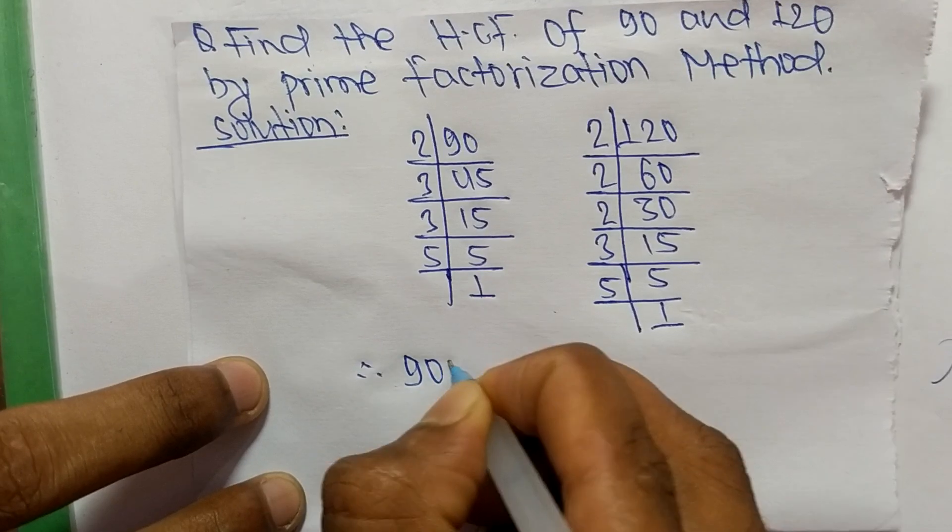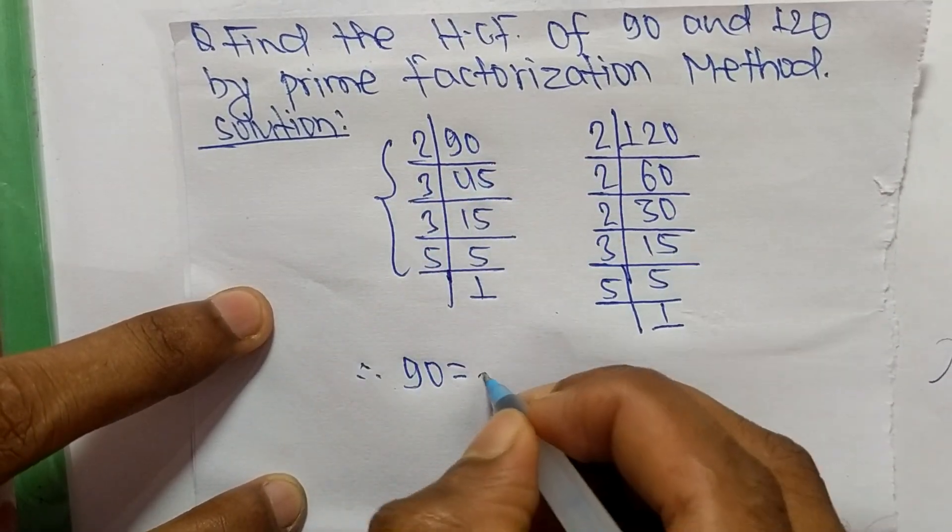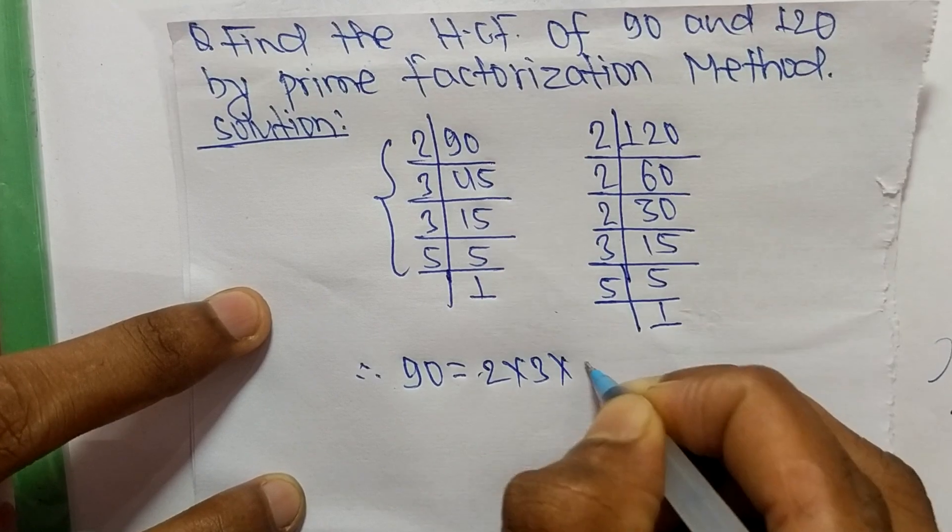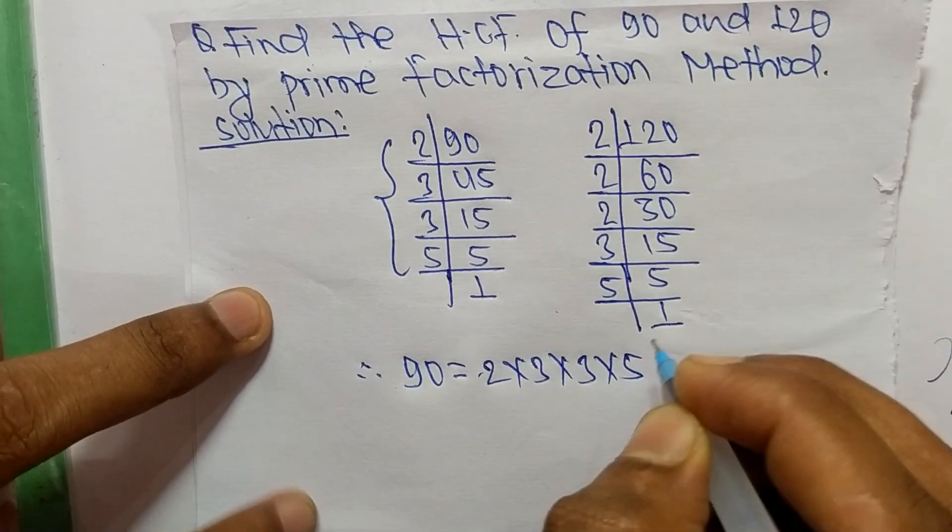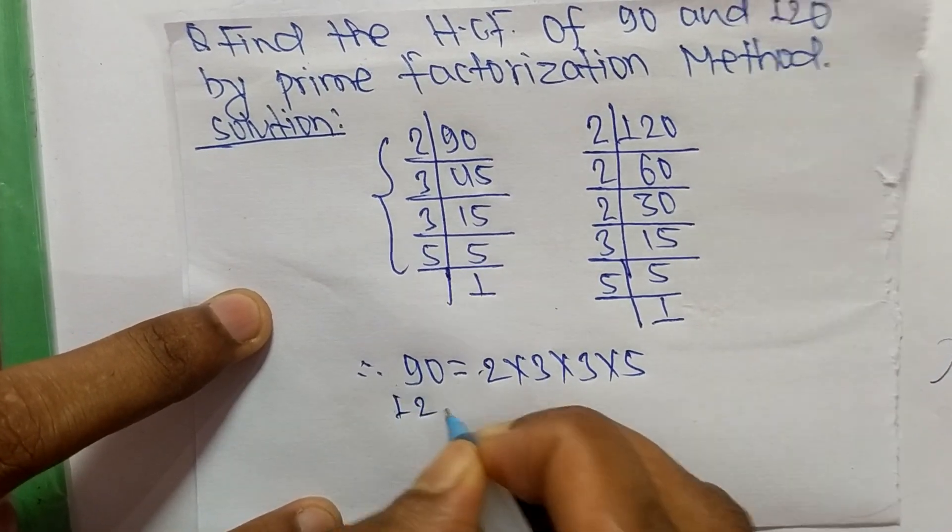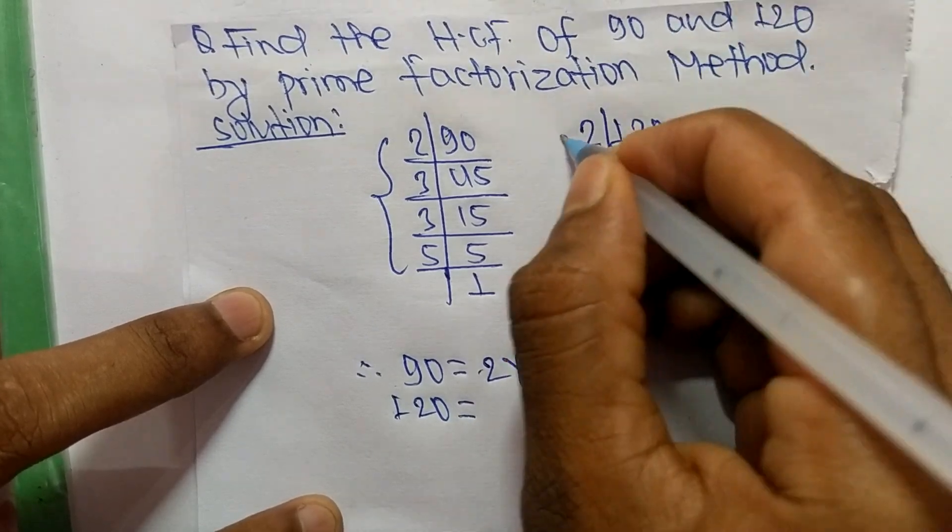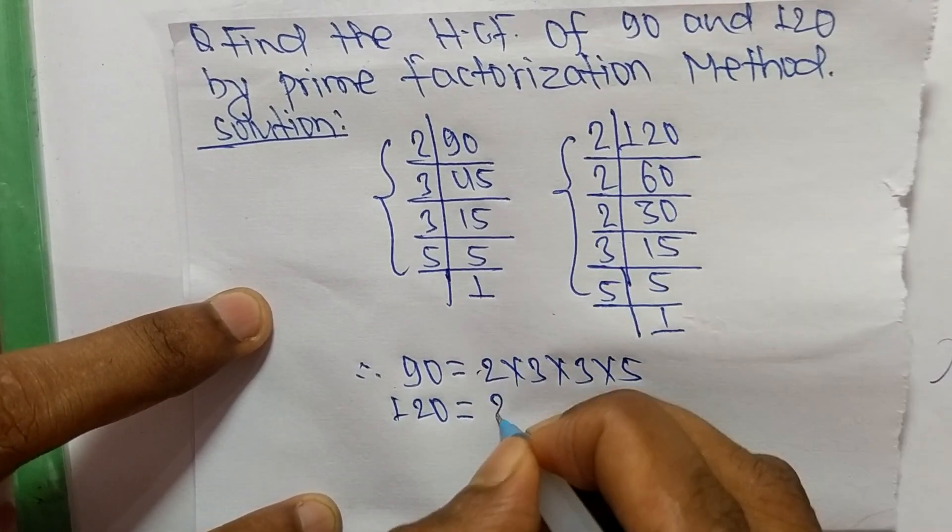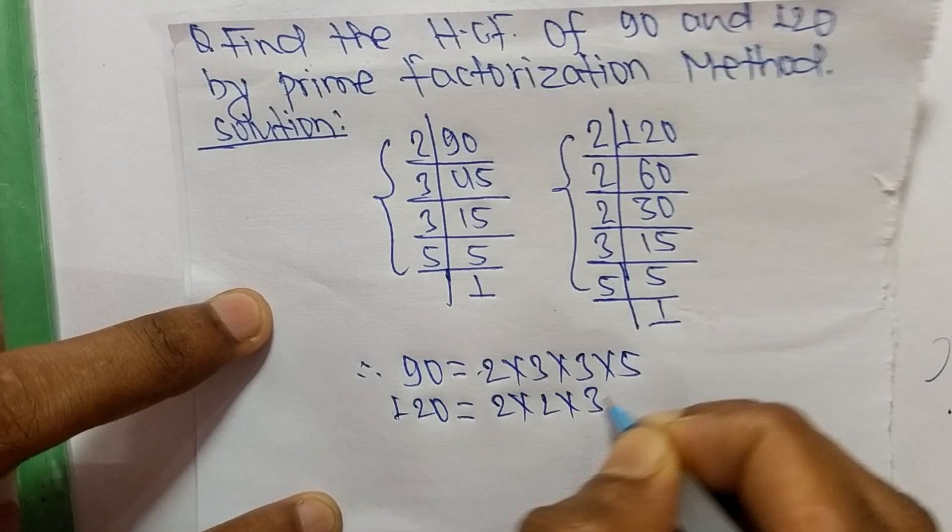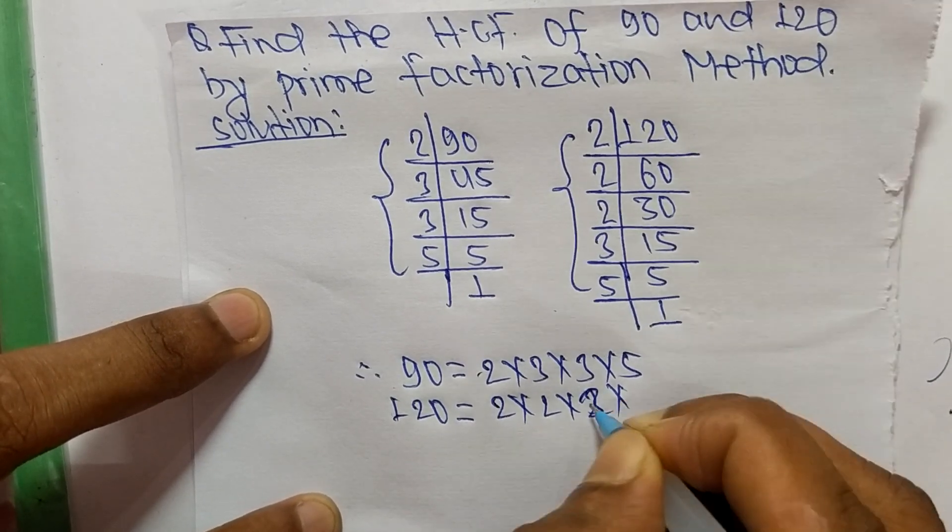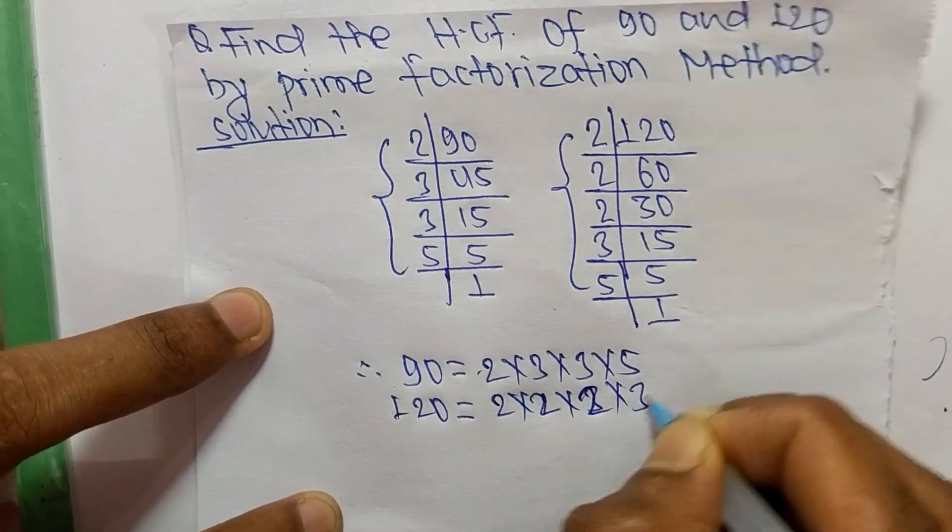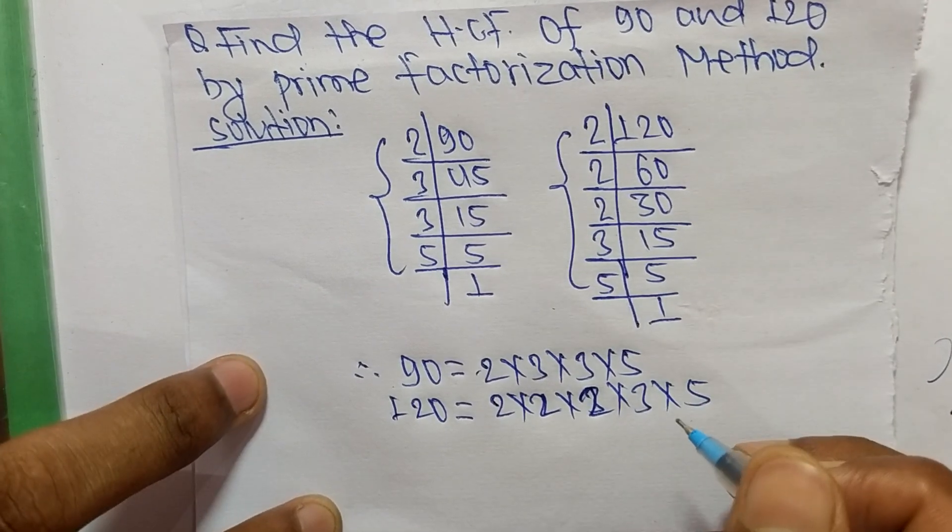Now from these prime factors we can write: 90 is equal to 2 times 3 times 3 times 5, and 120 is equal to 2 times 2 times 2 times 3 times 5.